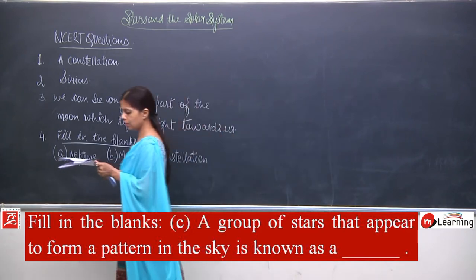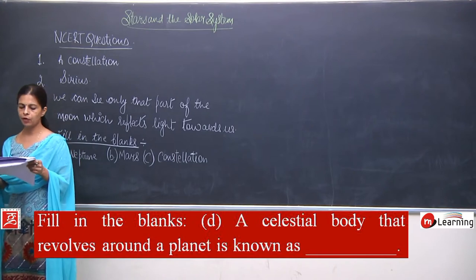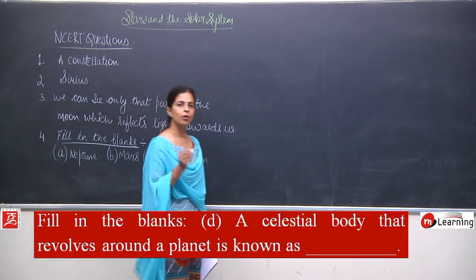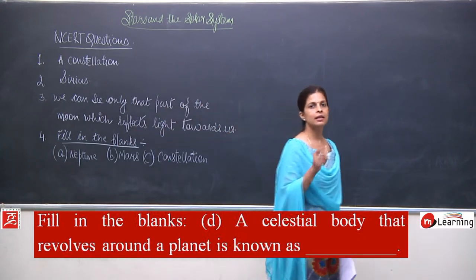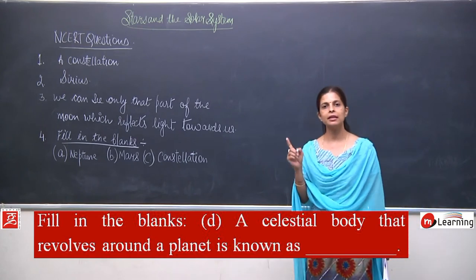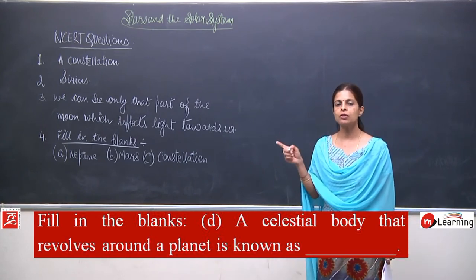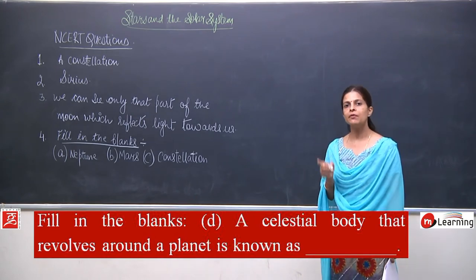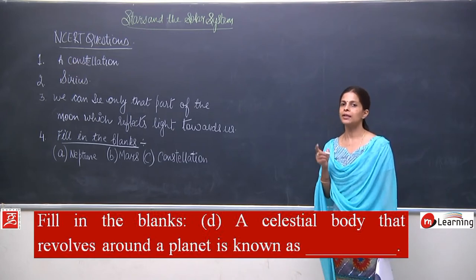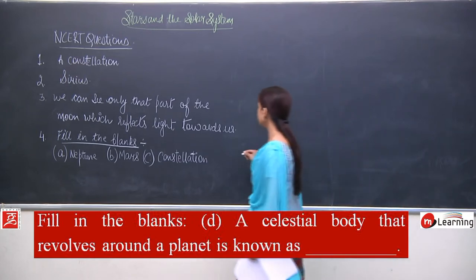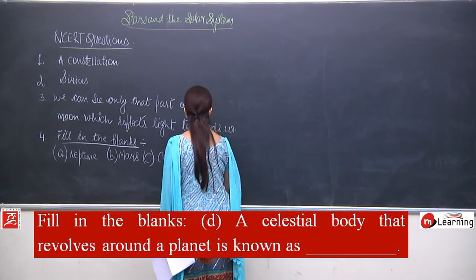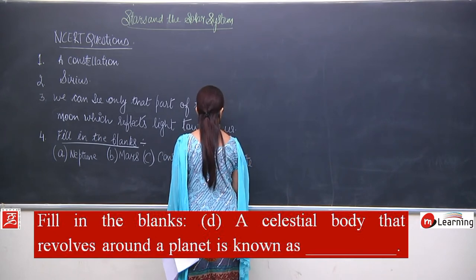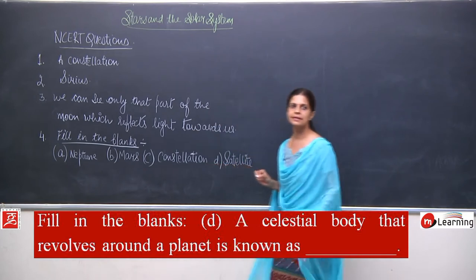Part D: a celestial body that revolves around a planet is known as — when a body moves around the sun following the rules to be listed as a planet, we call it a planet. But when a body moves around the planet, it has to be a satellite. So D is satellite.